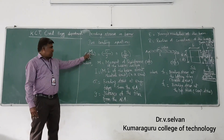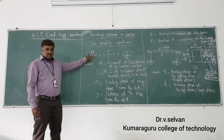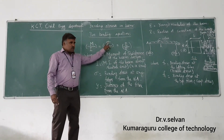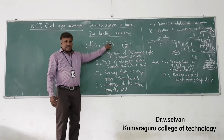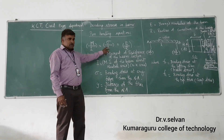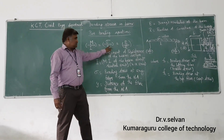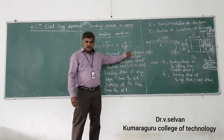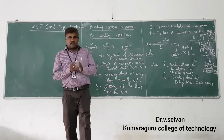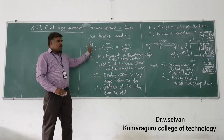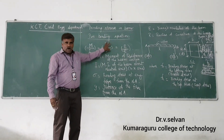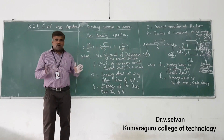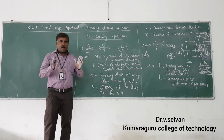The pure bending equation states that the moment M divided by the moment of inertia I of the section about the neutral axis should be equal to the bending stress sigma at any fiber at distance y from the neutral axis, equal to E divided by R, the radius of curvature. So the equation is M/I = σy/y = E/R.